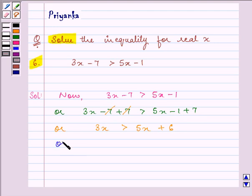On subtracting 5x from both sides, we can simplify it further, which gives us minus 2x is greater than 6.